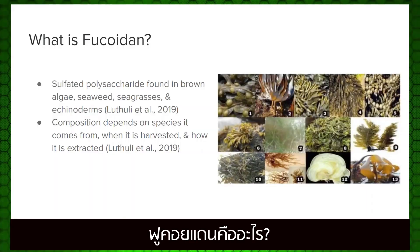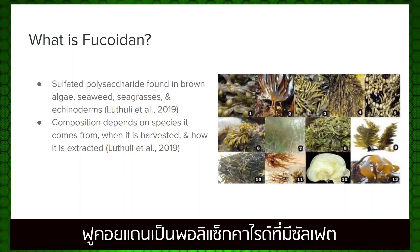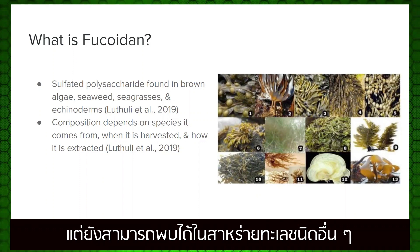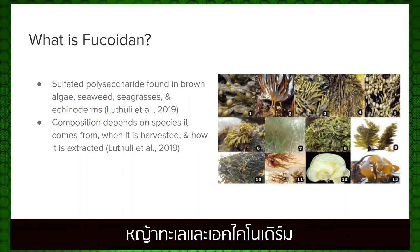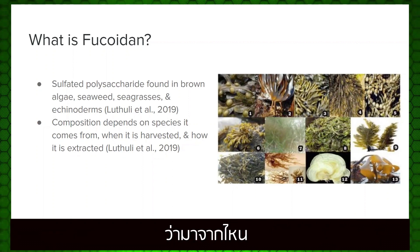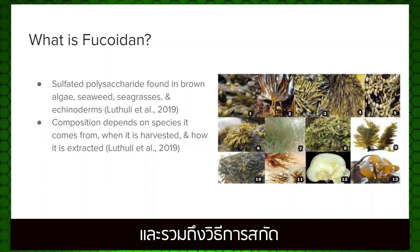Fucoidan. To begin with, what is Fucoidan? Fucoidan is a sulfated polysaccharide commonly found in brown algae, but it can also be found in other species of seaweed, seagrasses, and echinoderms. The composition of Fucoidan is dependent on the specific species it comes from, when it is harvested, and how it is extracted.